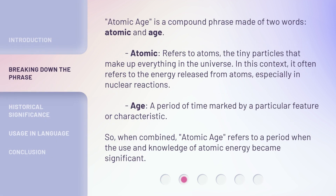Atomic Age is a compound phrase made of two words: atomic and age. Atomic refers to atoms, the tiny particles that make up everything in the universe. In this context, it often refers to the energy released from atoms, especially in nuclear reactions. Age refers to a period of time marked by a particular feature or characteristic. So when combined, Atomic Age refers to a period when the use and knowledge of atomic energy became significant.